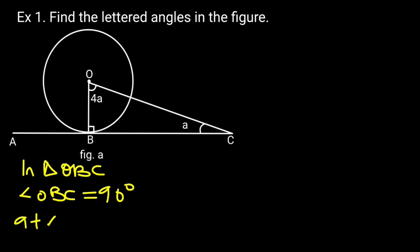So A plus 4A plus 90 degrees is equal to 180 degrees. Reason: Sum of angles in a triangle is equal to 180 degrees.